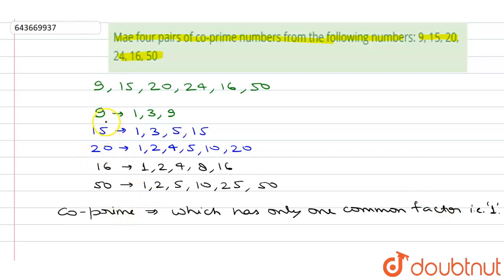So from the above factors, we will look at the numbers which have common factors as 1. If we look at 9 and 15, they have 3 as a common factor, so it cannot be a co-prime number. If we look at 9 and 20, we can clearly see that it has only one common factor which is 1. Therefore, the HCF of 9 and 20 is 1, and it is a co-prime number. So this is our first pair.